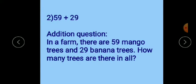Now second one: 59 plus 29, these two are the numbers. First we will make an addition question and after that we will solve it. The addition question is: in a farm there are 59 mango trees and 29 banana trees. How many trees are there in all? See, in addition questions you have to write words like in all, altogether, total, like this.